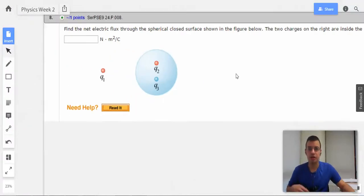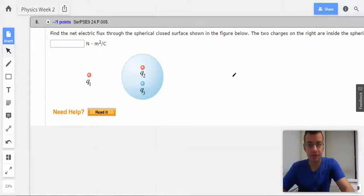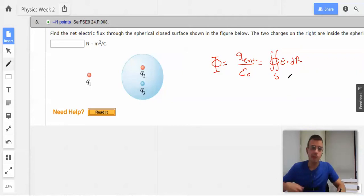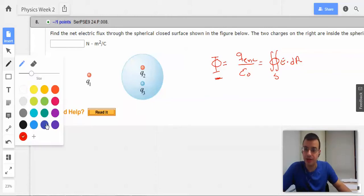All right, so we want to know the flux. So the definition of electric flux is Q enclosed over epsilon not, which equals, let's see, surface integral of E dot dA. OK, so we want to find the flux, which is this guy, and we can use either one of these two formulas over here. I am going to use the first formula.